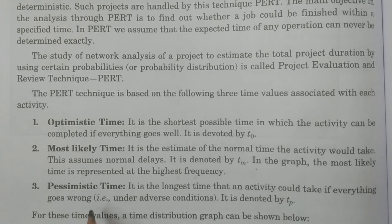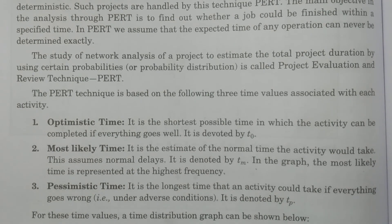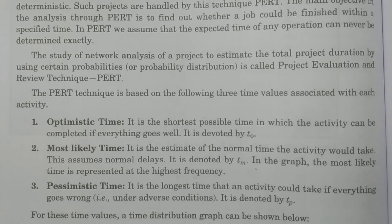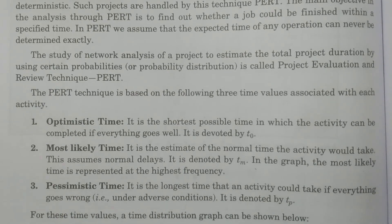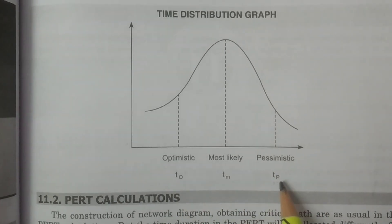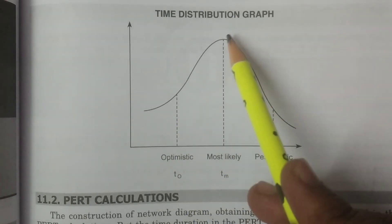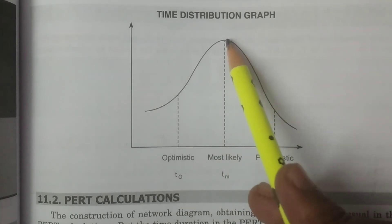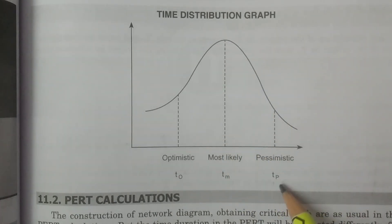The third time is pessimistic time — the longest time that an activity could take if everything goes wrong, that is under adverse conditions. Obviously, if everything goes wrong, the time is going to have too much delay. That maximum time is known as pessimistic time. These are the three time periods. In the distribution graph, you can observe optimistic time T-naught, most likely time Tm, and pessimistic time Tp, where the maximum frequency is observed at Tm.